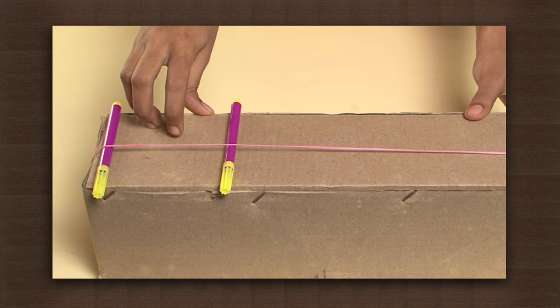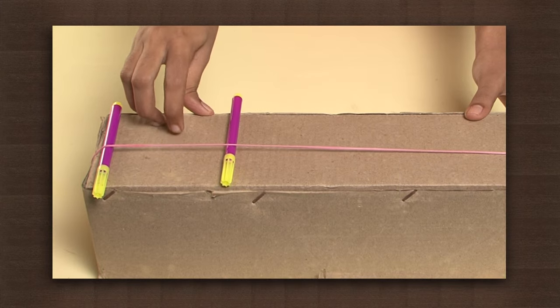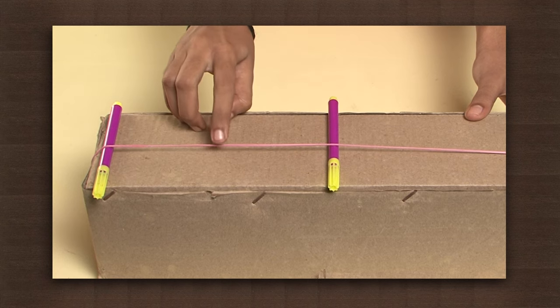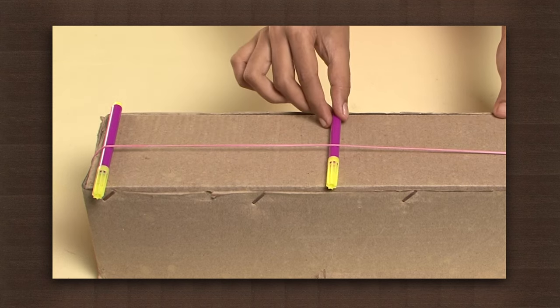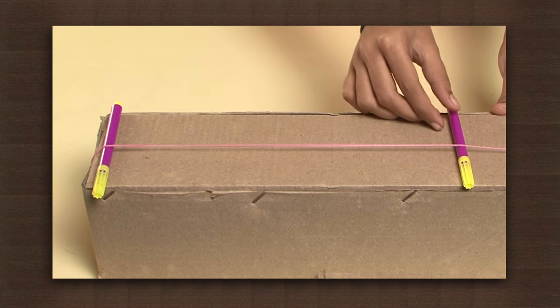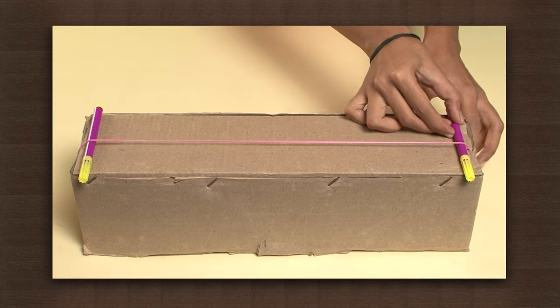Now, pluck the band and hear the pitch. It's sharp. Now, adjust the distance between the pens to increase the length of the vibrating band. Pluck it and hear the pitch. You will notice a difference in the nature of the sound produced as we change the length of the string.